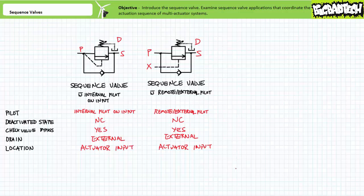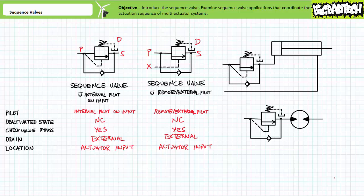External drains are customarily routed back to the reservoir above normal fluid level to ensure free movement of the drain fluid and no back pressure develops in the drain line. Finally, sequence valves are customarily found on the inputs of actuators and coordinate or sequence the action of multi-actuator systems. Note the term input is relative in nature, since both ports of a double acting cylinder or bi-directional hydraulic motor could rightly be considered either an input or output depending upon direction of flow.